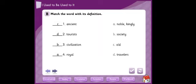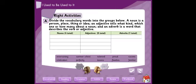Now let's move to page 50 in your student book. Divide the vocabulary words into the groups below. A noun is a person, place, thing, or idea - اسم شخص، مكان، شيء او جماد، or فكرة.